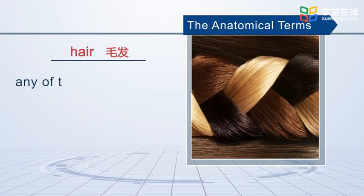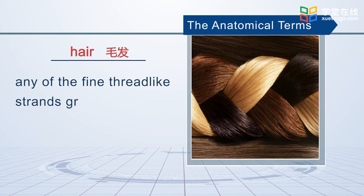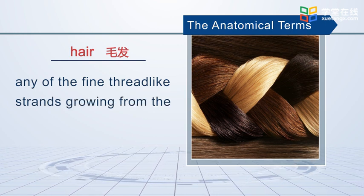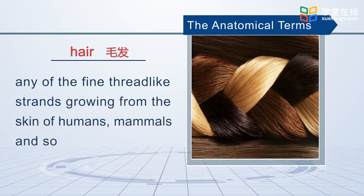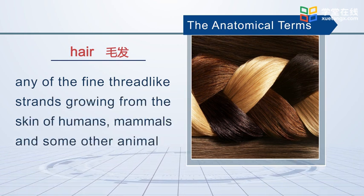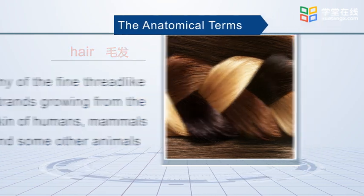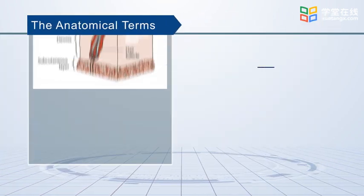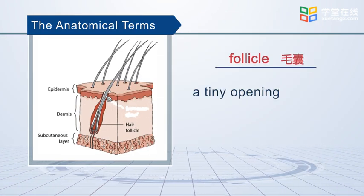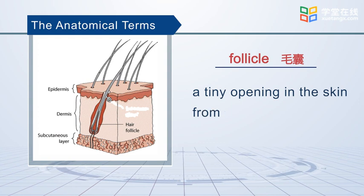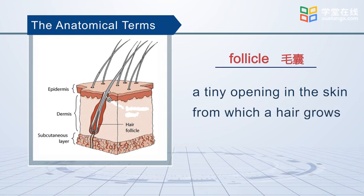Hair is any of the fine thread-like strands growing from the skin of humans, mammals, and some other animals. Follicle is the tiny opening in the skin from which a hair grows.